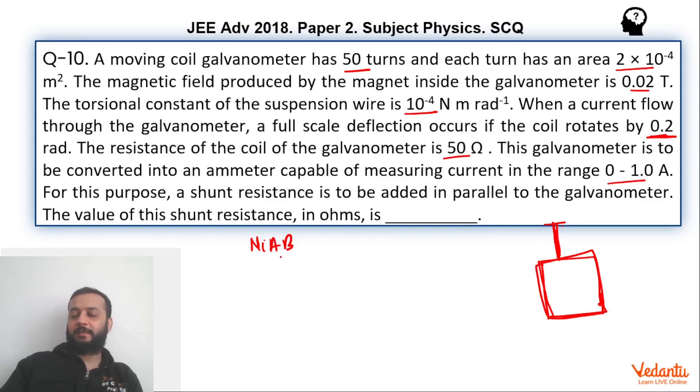In the case of galvanometer, the magnetic field is always perpendicular to the magnetic moment. So M is magnetic moment, this is magnetic field, sin 90 will become 1. This must be equal to kθ. k is the torsional constant.